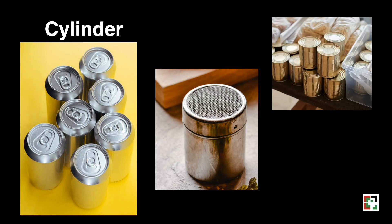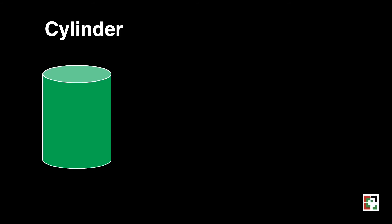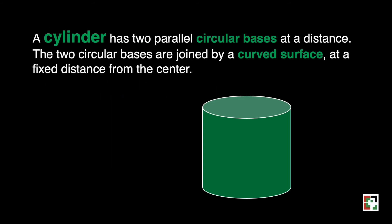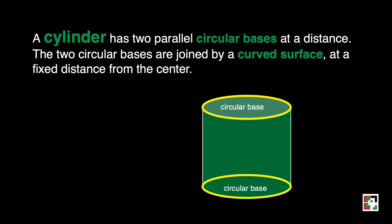Let us now have the cylinder. These are some examples of a cylinder. A cylinder has two parallel circular bases at a distance. The two circular bases are joined by the curved surface at a fixed distance from the center. This is our curved surface, and this is our height.